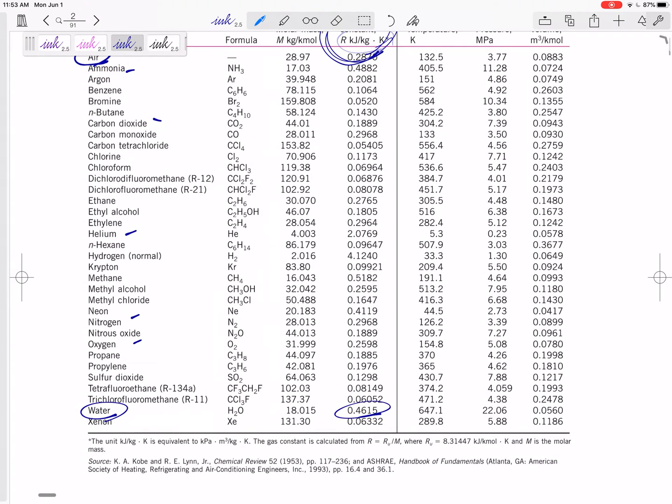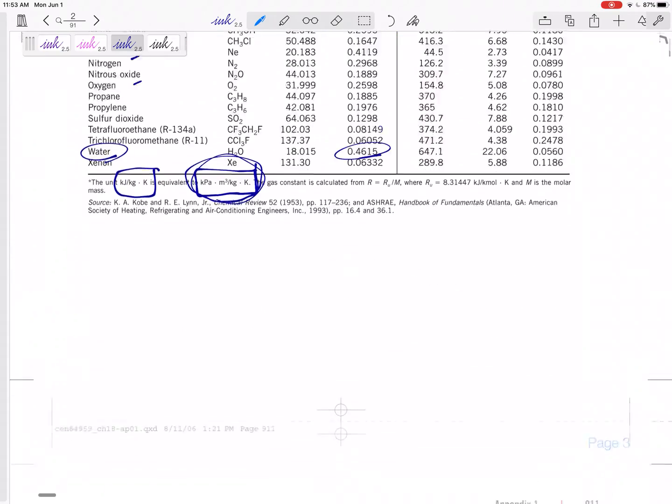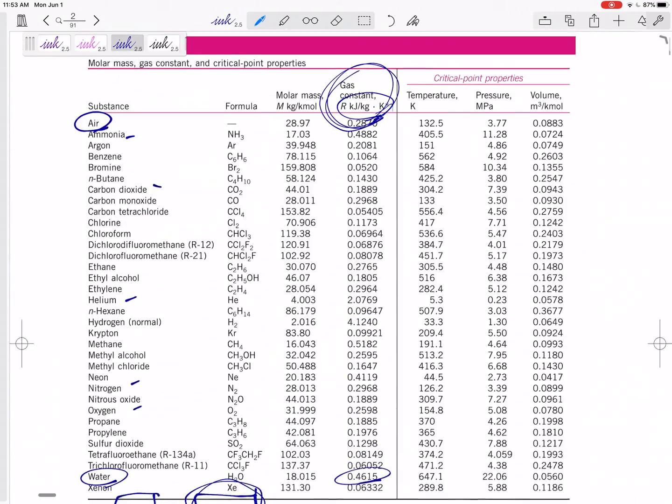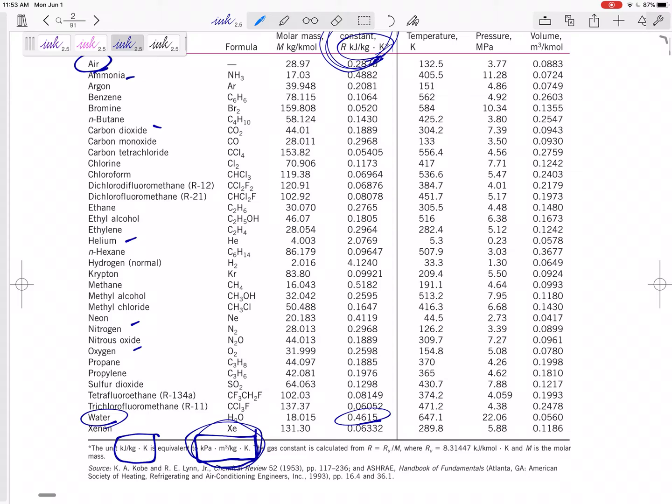They help us out here. This is also the same as in kPa meters cubed per kilogram K. So this is generally what I plug in because I know I have pressure on the left-hand side of my equation and my pressure is probably in kPa. In English units, we would look at table A-1E. In English units, we would look at table A-1E.